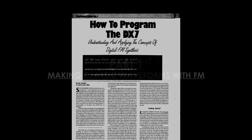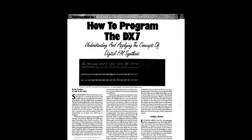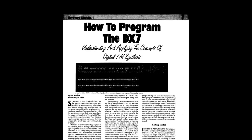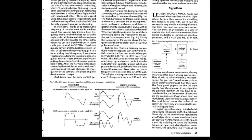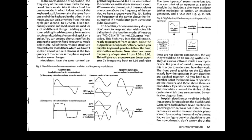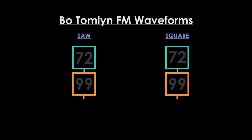Years ago I read an article by Bo Tomlin called 'How to Program the DX7'. In this article he describes how to create sawtooth and square waveforms on the DX7. I followed the examples but to me they didn't quite sound right.